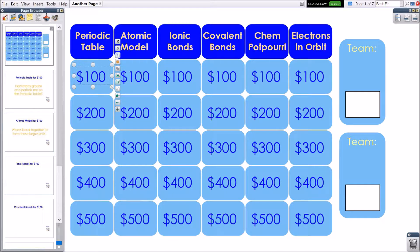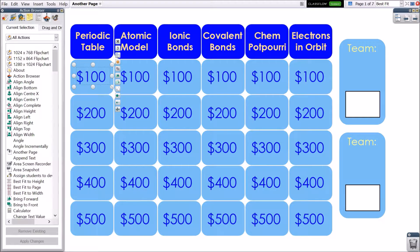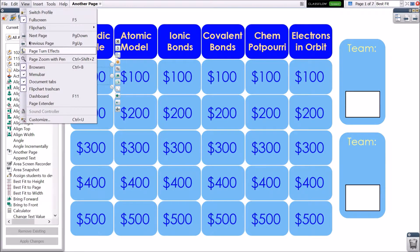Next, go to your action browser, located second from the right within your browsers. If your browsers are not visible, simply go to view, then browsers.